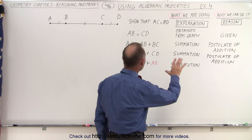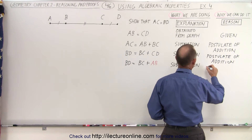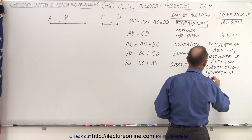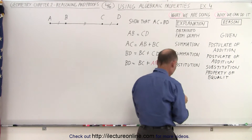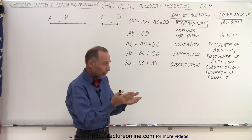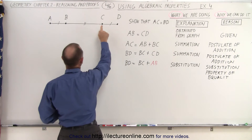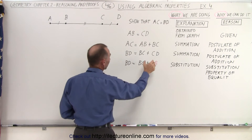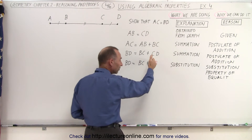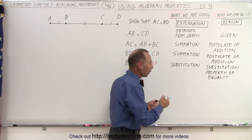And so what we could do here is substitution. The reason why we can make that substitution is the substitution property of equality. This means that if A is equal to B, we can replace A by B. In this case, segment AB equals segment CD, and therefore we can replace CD by AB because that substitution is valid — they're equal — and we use the substitution property of equality.